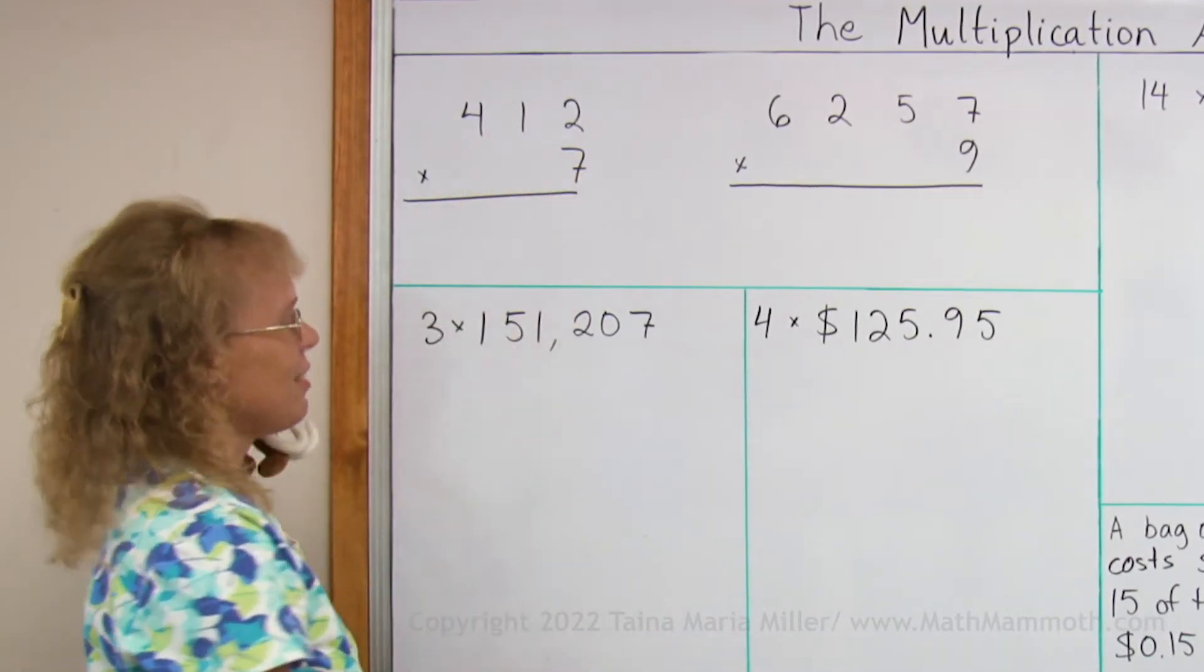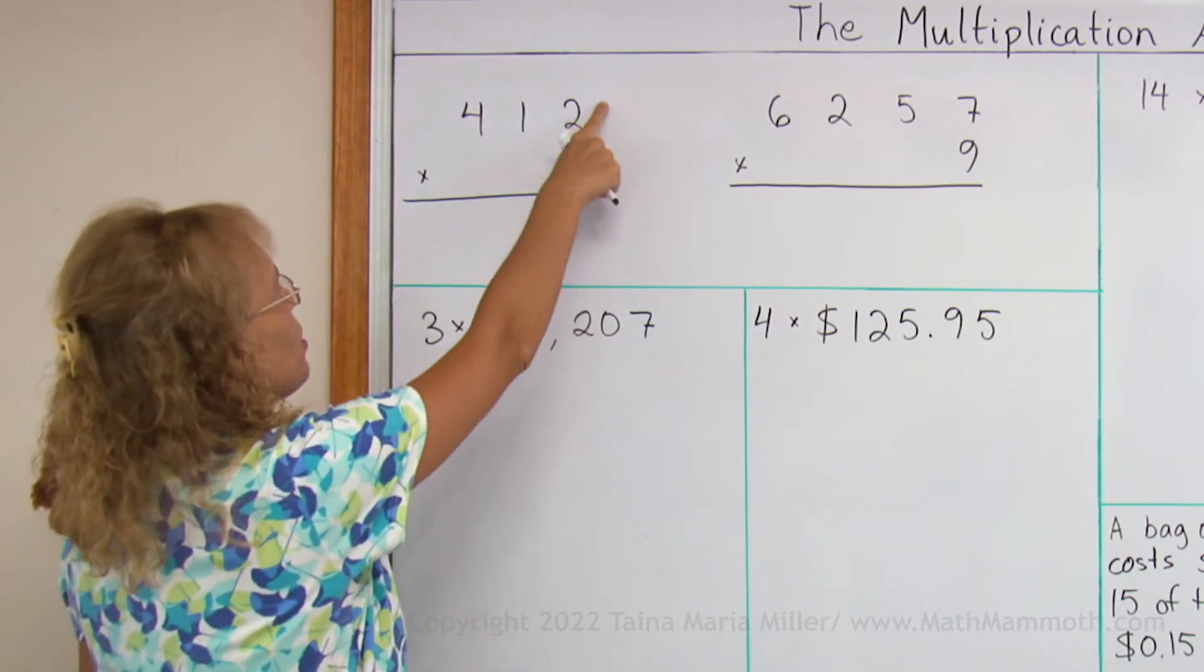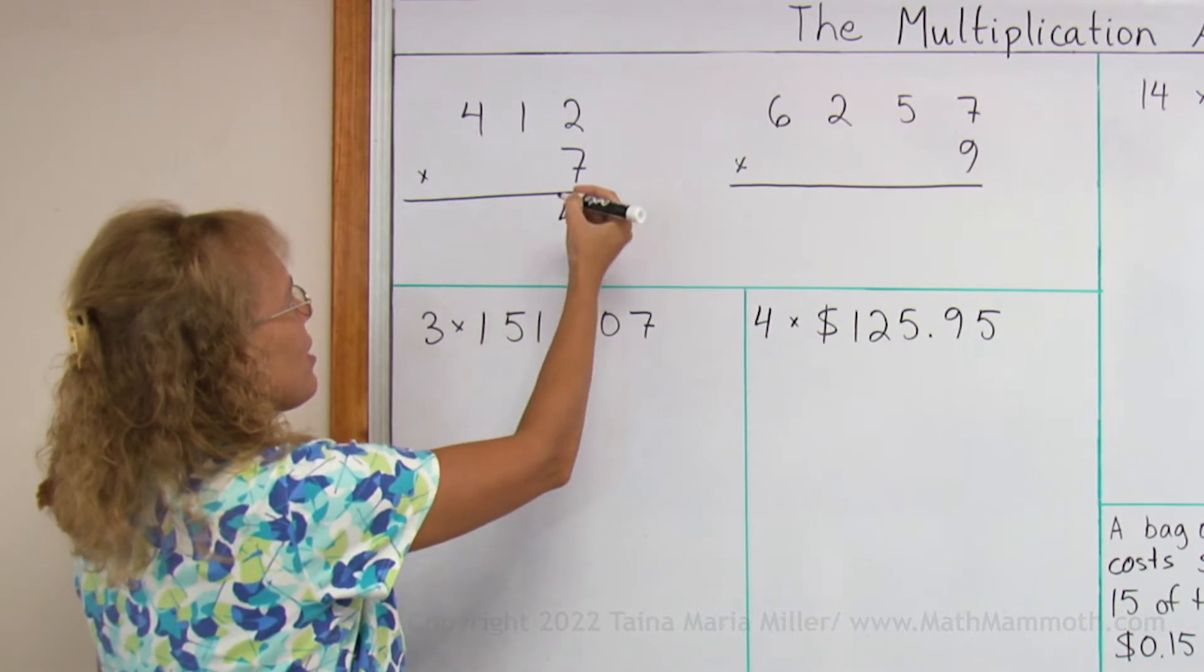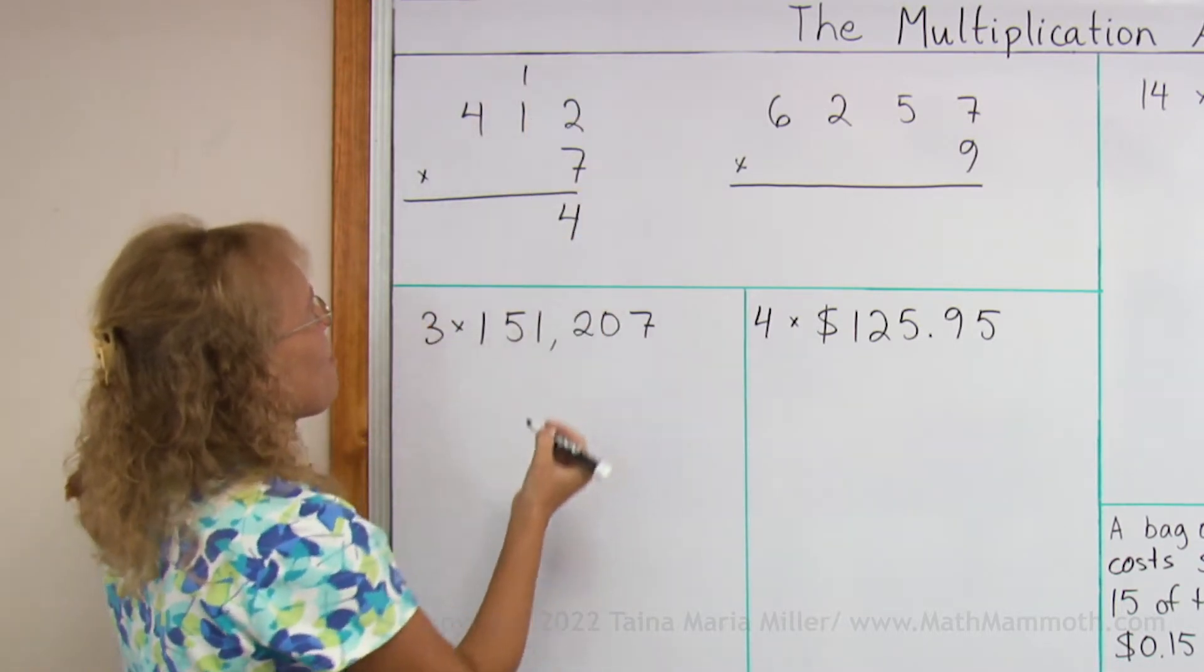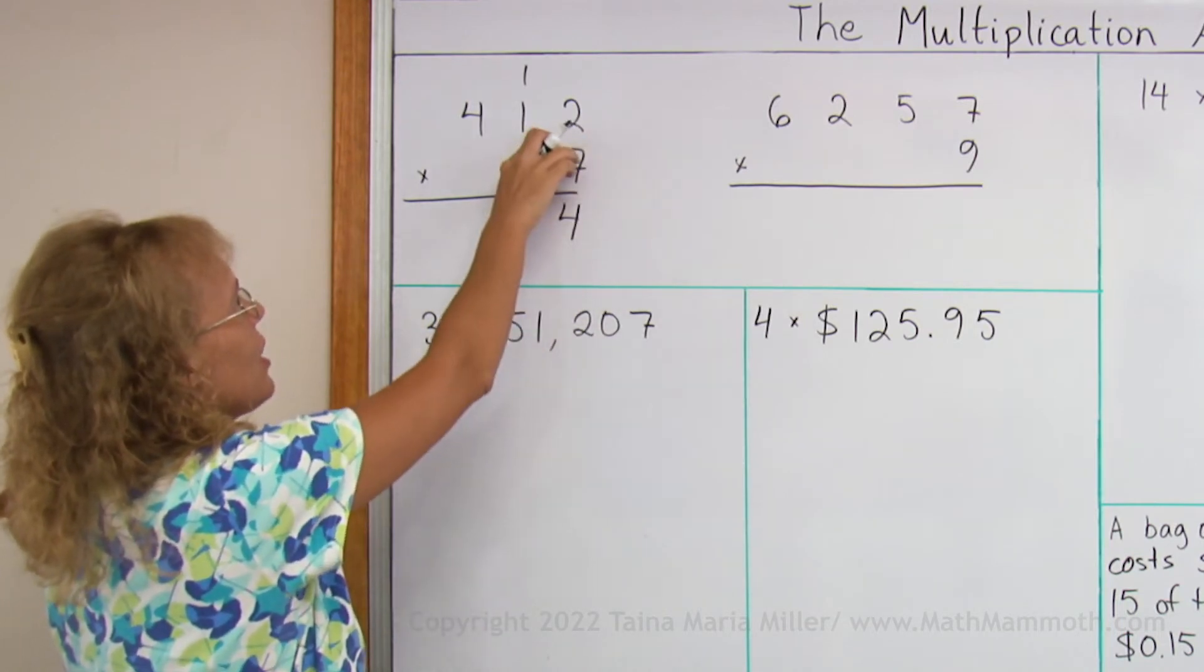For 412 times 7, this is how the algorithm went. We go 7 times 2, which is 14. I write 4 here in the ones place, but the 10 I need to regroup over there. And then I multiply into the tens, 7 times 1, which actually is 7 times 10.